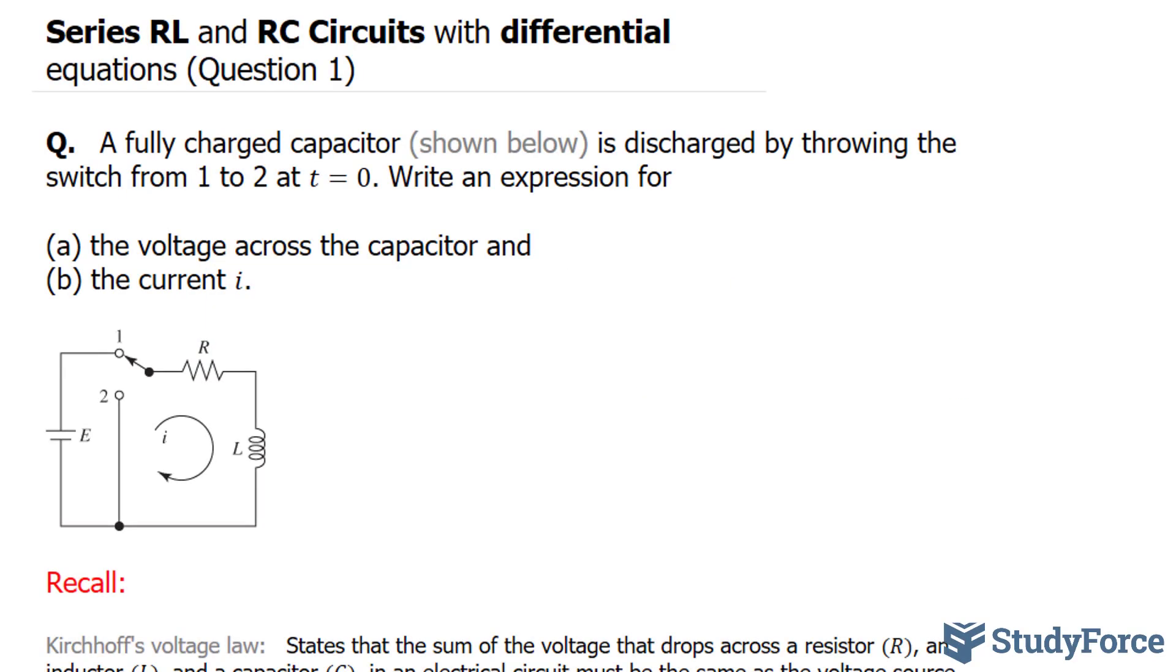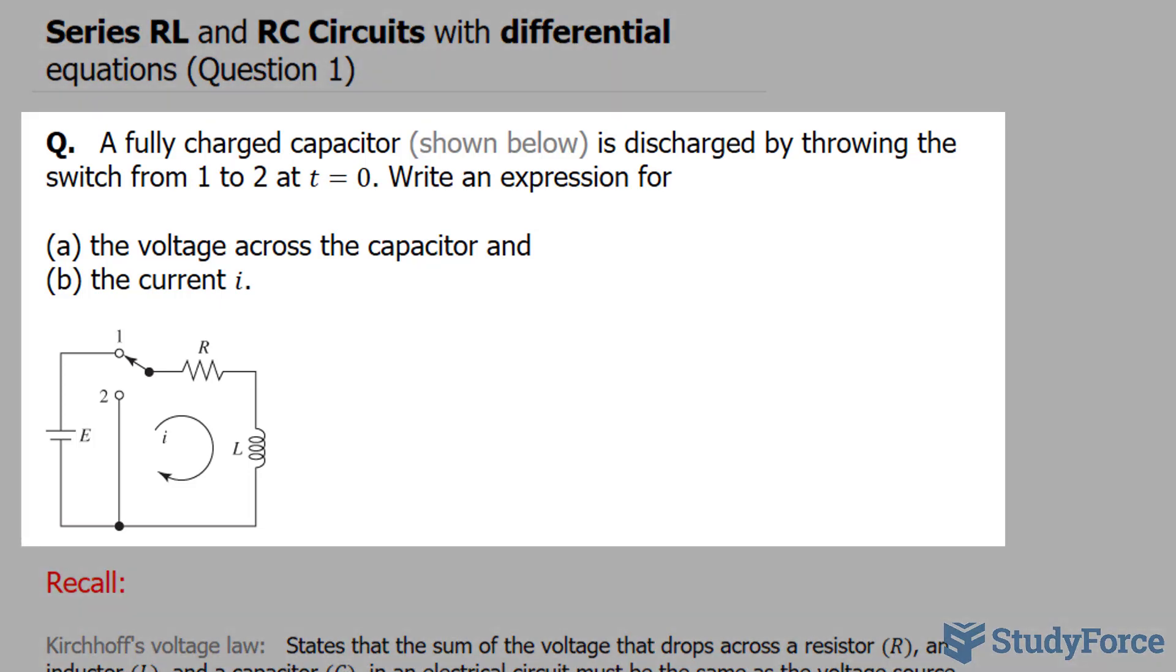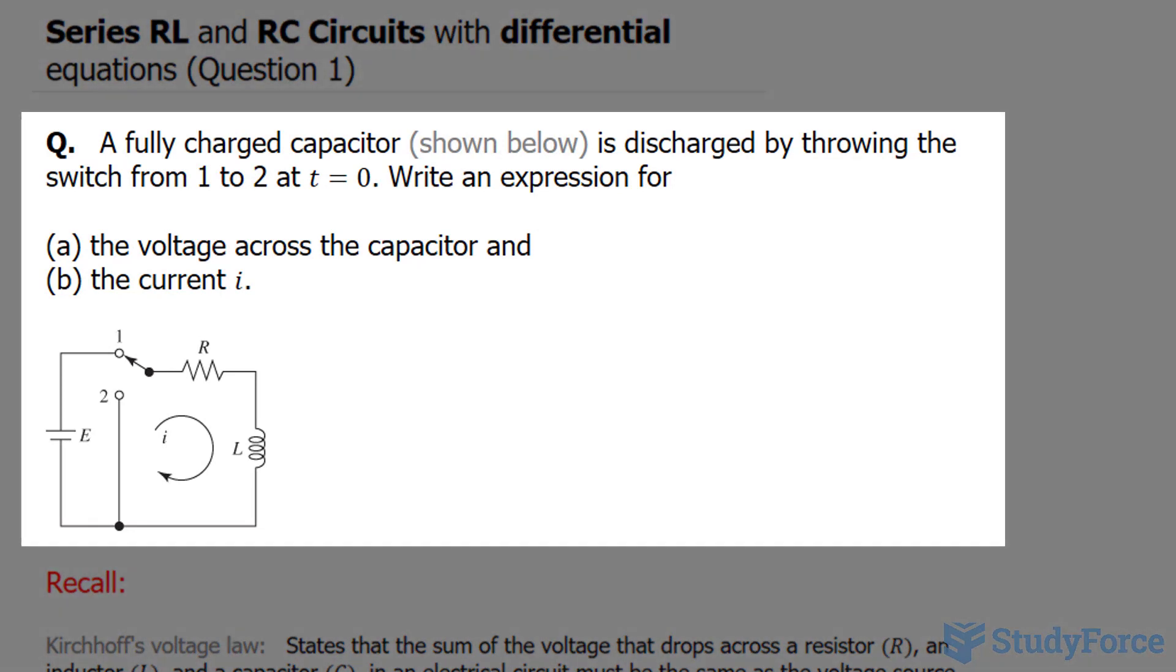In this lesson, we'll be discussing series RL and RC circuits with differential equations. This is question number one. The question reads: a fully charged capacitor, shown below, is discharged by throwing the switch from position 1 to position 2 at time 0.